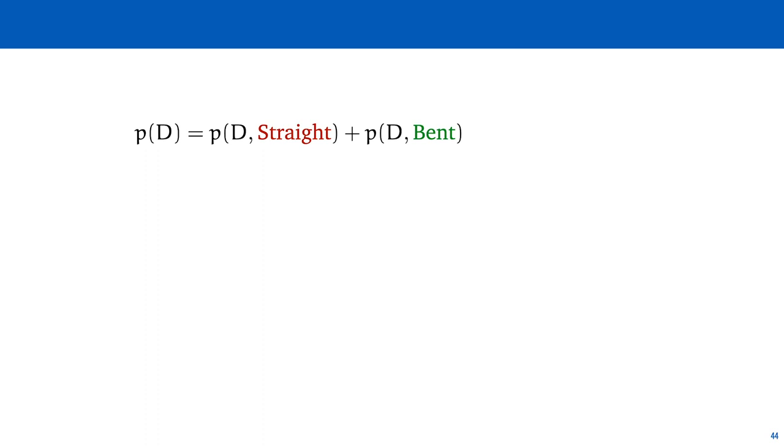When working out Bayesian problems like this, it's often good to start with a marginal distribution on the data. This is the probability or probability density of the data with the models marginalized out. In this case, it's a simple sum over the two joint probabilities of the data together with the straight model and the data together with the bent model. We use the equation from slide 21 to break each of these up into a prior probability and a data probability.